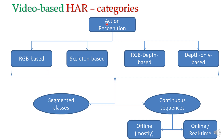Looking at action recognition by data modality: RGB-based, meaning image frame-based — one second of video at 30 fps gives 30 consecutive frames — is the most widely used approach, with thousands of papers published. Skeleton-based recognition became prominent especially after Kinect sensors arrived, which can extract depth information and generate skeleton representations.